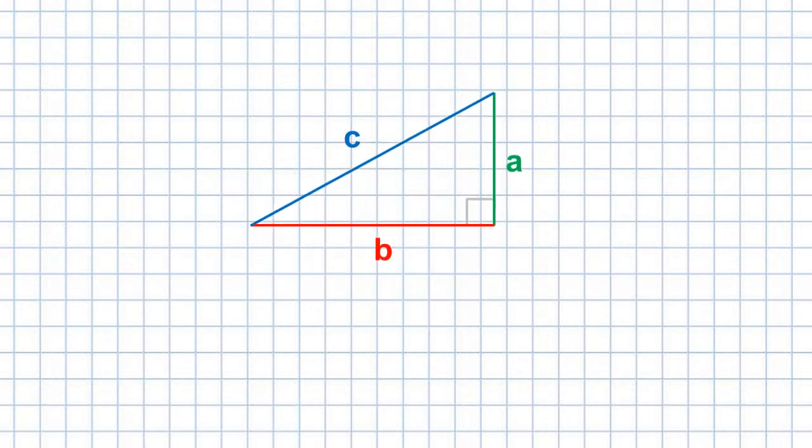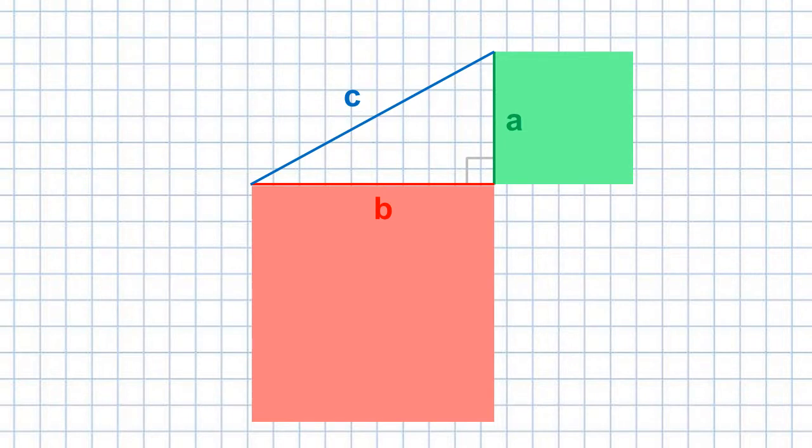If we create two squares based on the lengths of the legs of this triangle, it's easy to see that the areas of these squares are A squared and B squared, respectively.